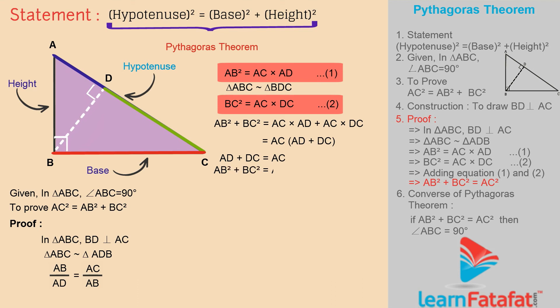Therefore, AB² plus BC² equals AC times AC. That is, AB² plus BC² equals AC². Hence, Pythagoras theorem is proved.